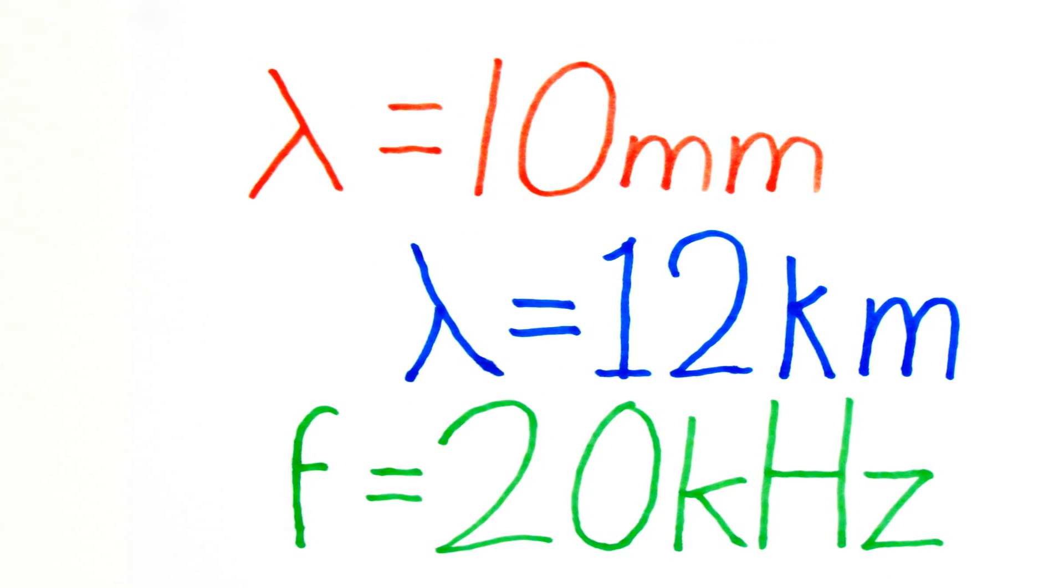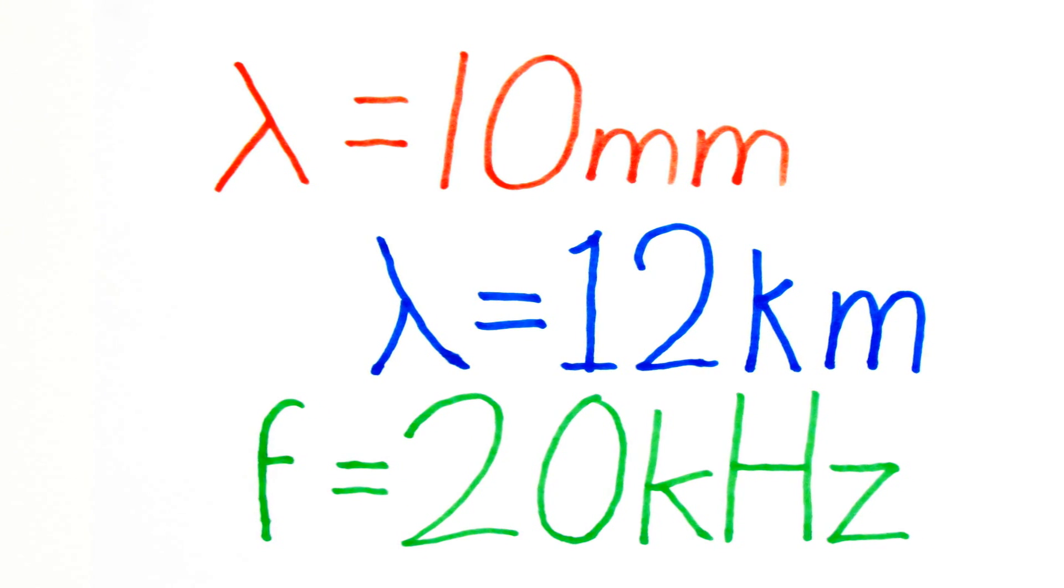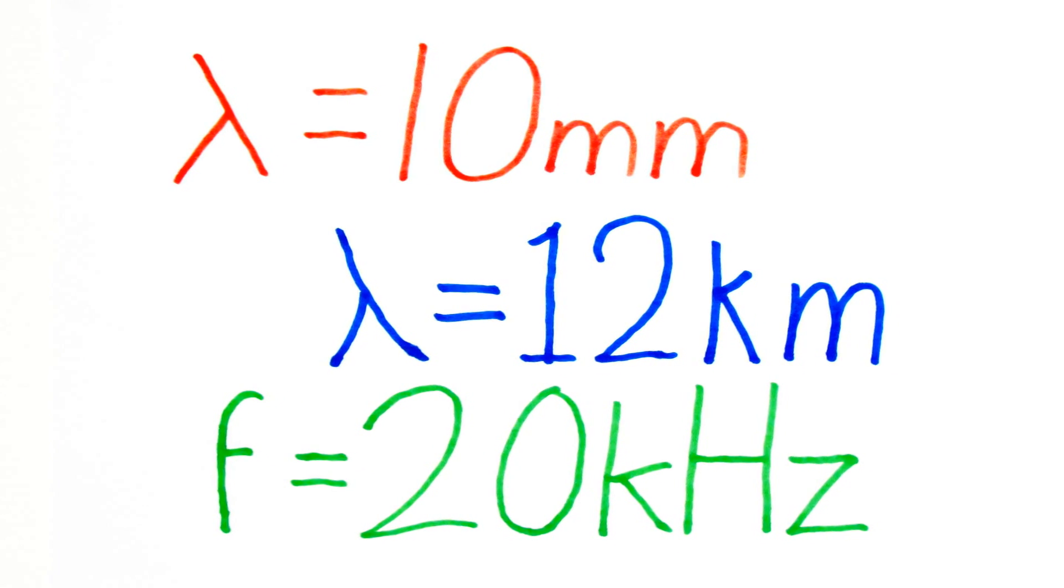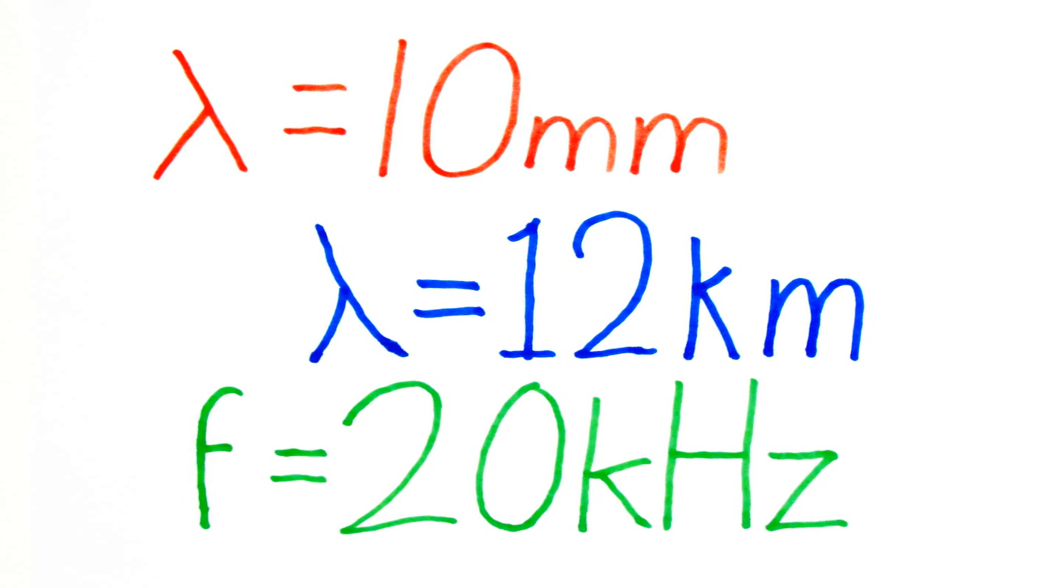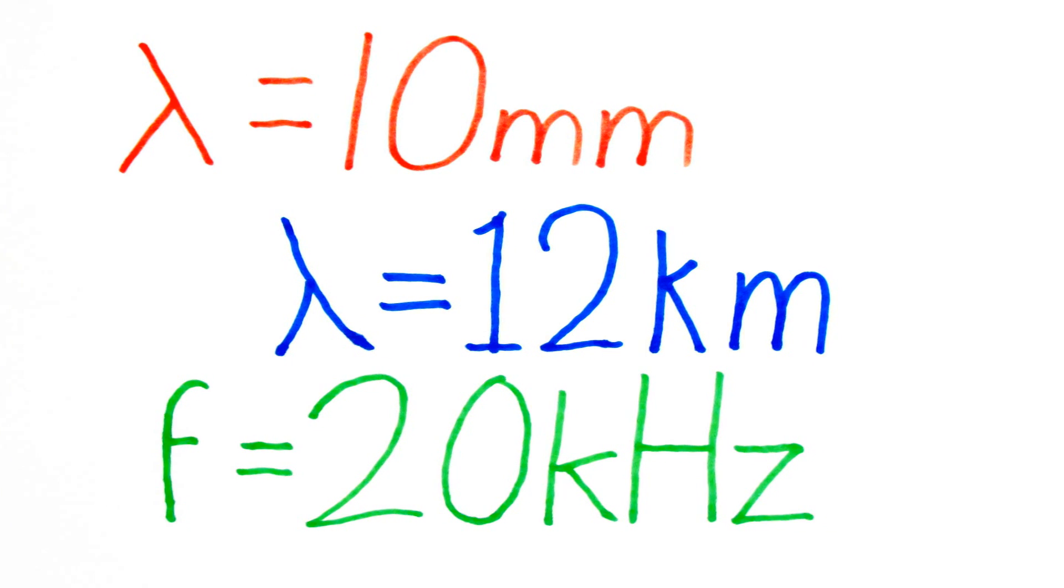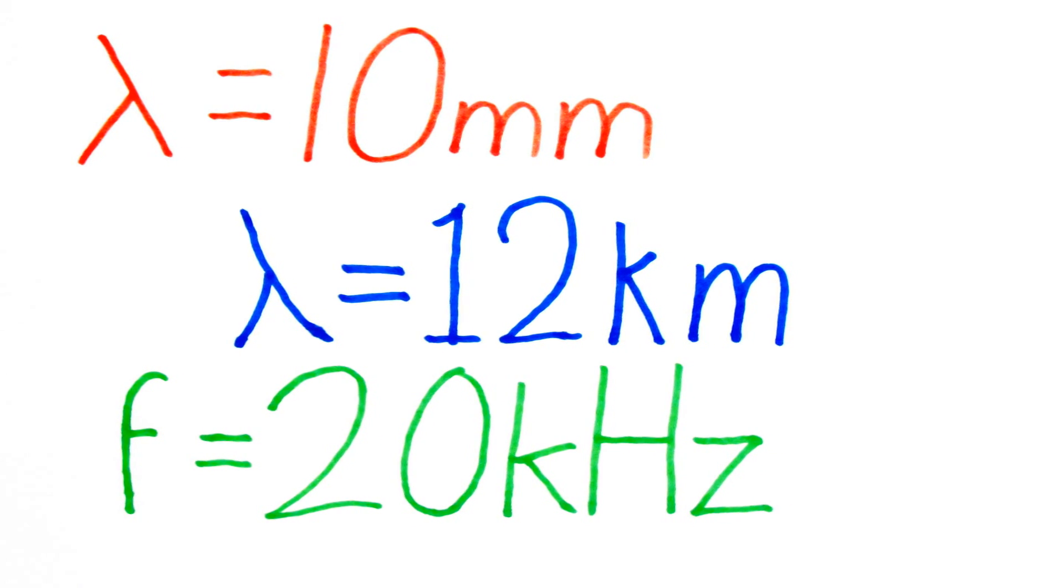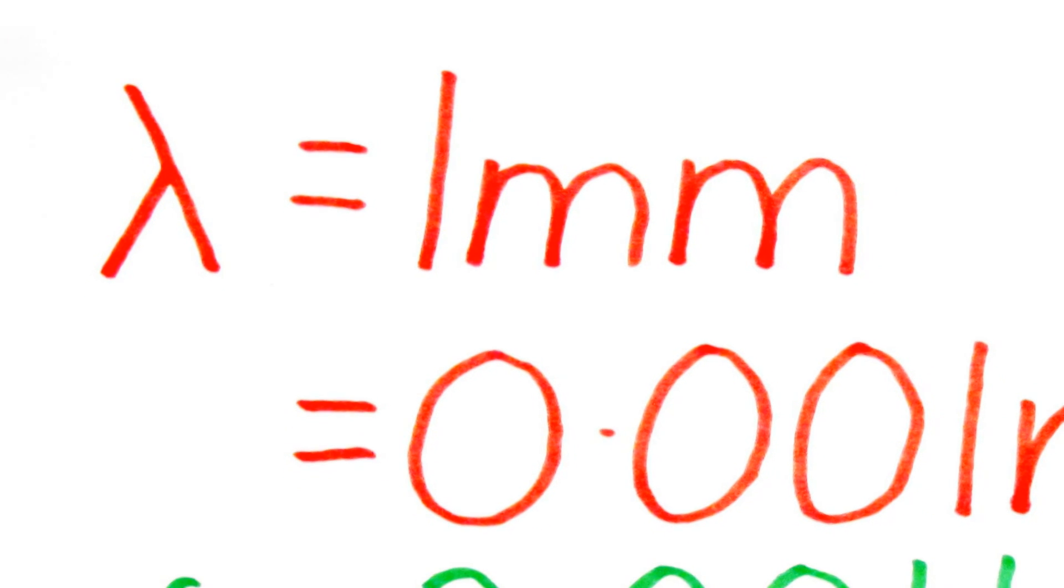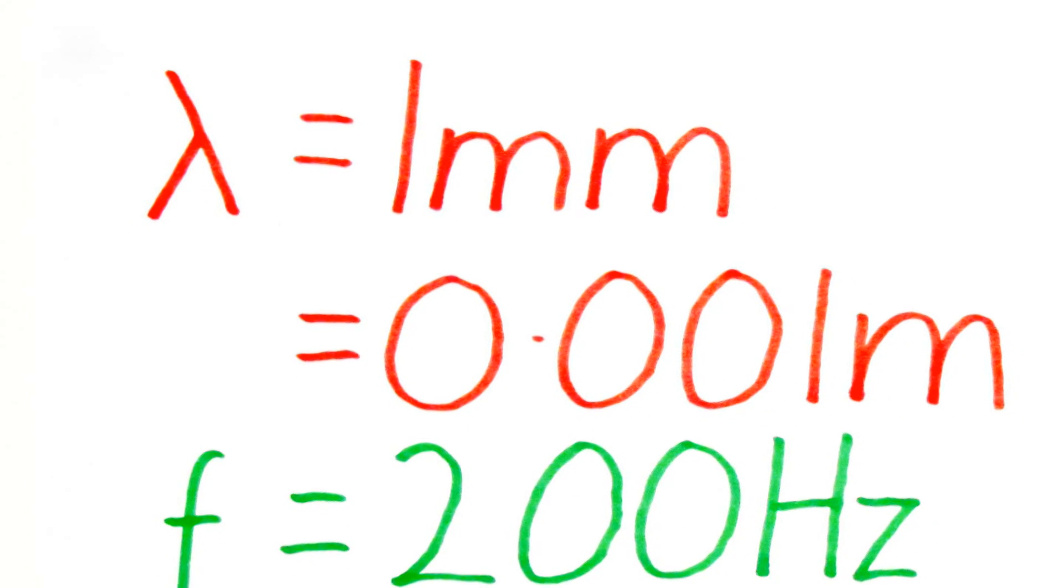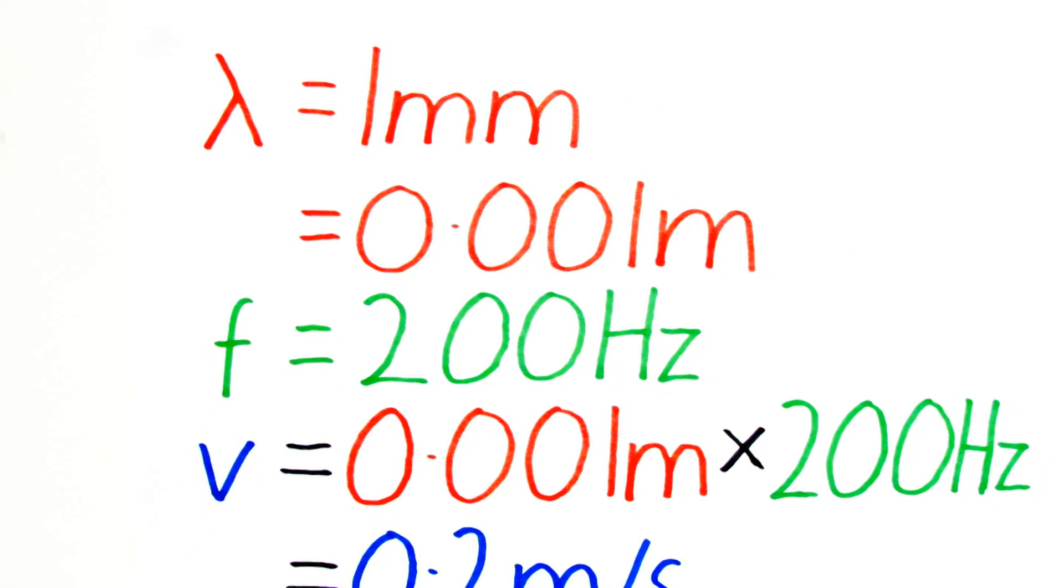It's possible that they might give you values which aren't in standard units. Keep an eye out for things like millimeters or kilometers or possibly kilohertz. Remember kilo just means a thousand so one kilohertz is a thousand Hertz. 20 kilohertz is 20,000 Hertz. Likewise milli just means one thousandth so one millimeter is a thousandth of a meter or 0.001 of a meter. So if for example you've got a wavelength of one millimeter and a frequency of 200 Hertz you just do 0.001 multiplied by 200 and you should get an answer of 0.2 meters per second.